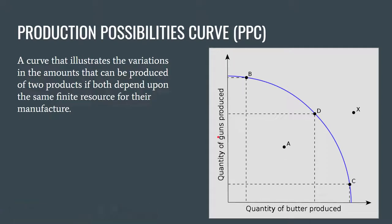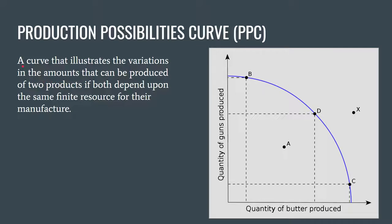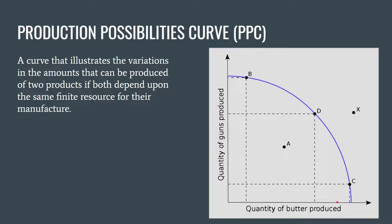Our last vocab term is the production possibilities curve — a really important part of economics, especially at the macro level. A production possibilities curve is a curve that illustrates the variations in amounts that can be produced of two products if both depend on the same finite resource. In this graph, we're comparing the quantity of guns a producer or country could produce relative to the amount of butter they could produce.